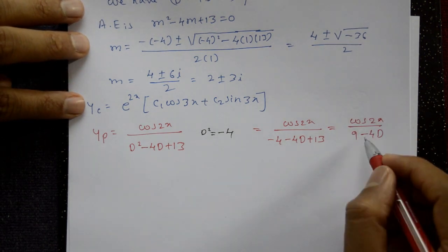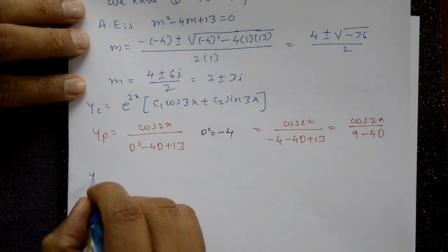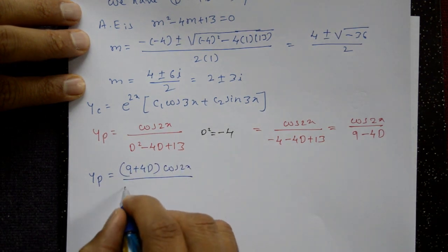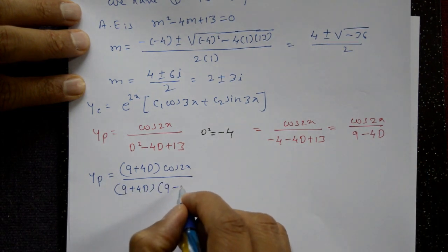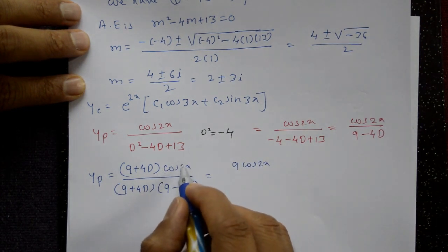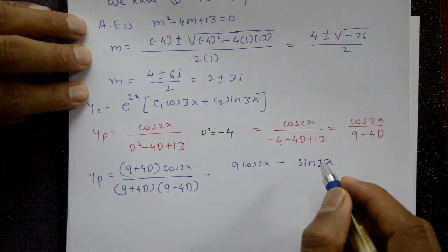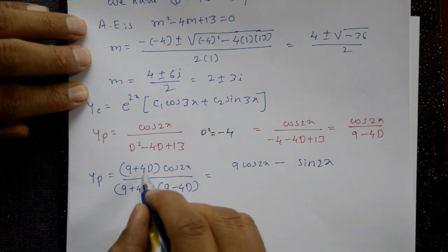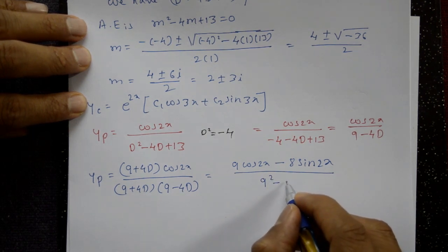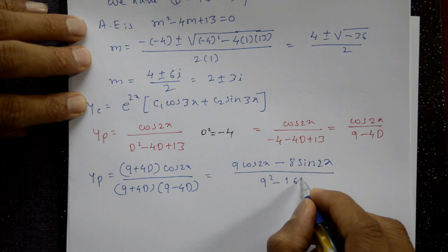Since we can't apply directly, multiply and divide by (9 + 4D). So yp = [(9 + 4D) · cos 2x] / [(9 - 4D)(9 + 4D)]. Expanding the numerator: 9 cos 2x + 4D(cos 2x) = 9 cos 2x - 8 sin 2x. The denominator uses a² - b² = 81 - 16D².